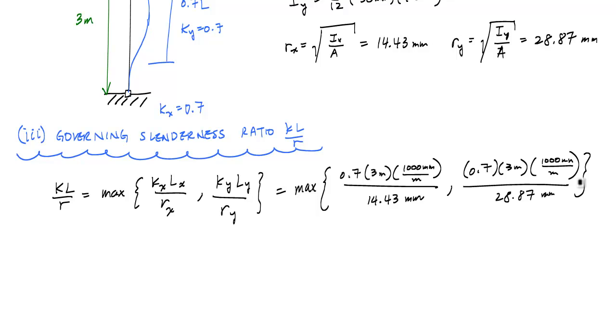If I go through and I substitute the numbers, what I get is that kl over r is the maximum of 145.5 and 72.75. And obviously, the maximum of this is 145.5 and that tells me that my buckling about the x-axis here governs.